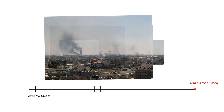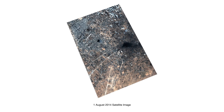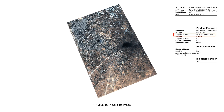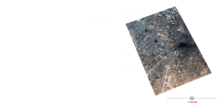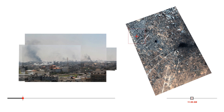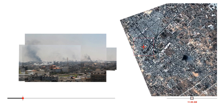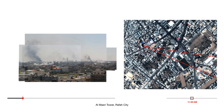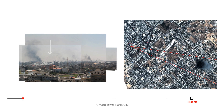We identify this strike on a satellite image from the first of August. The metadata on the satellite image notes it was taken at 11:39am local time. We identify a ground level photograph of the smoke plume that best matches with the location and size of the plume on the satellite image.